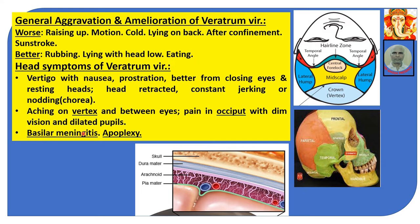Basilar meningitis — meningitis comes from the meninges. The brain has three layers of covering: pia mater, arachnoid mater, and dura mater. These three are collectively called meninges. When inflamed due to infection by tubercular bacteria, it is called basilar meningitis — a very serious disease in which many babies and children used to die every year.